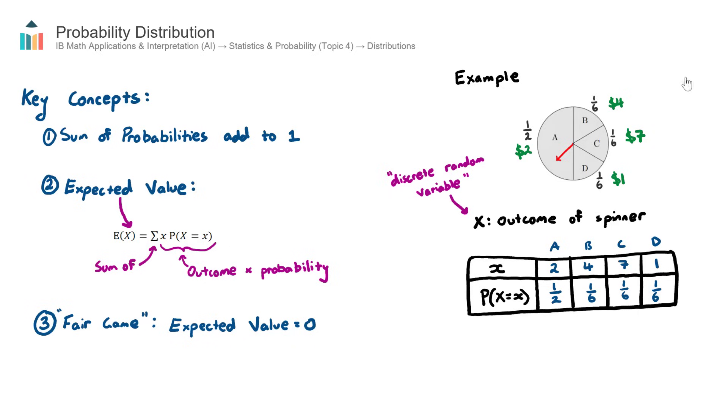Now that we have completed our probability distribution table, let's look at this term here, expected value. What this expected value means, I like to think of it as a long-term average. So if I was to do this spinner over and over again, say a thousand times, or 10,000 times, or theoretically maybe an infinite number of times, what is my expected result per spin? Think of it like an average, but even better, it's actually a weighted average.